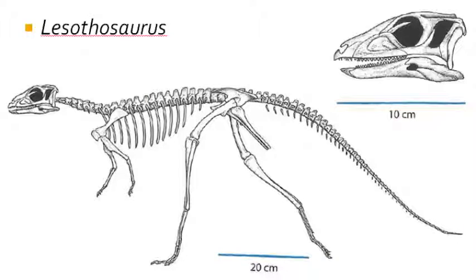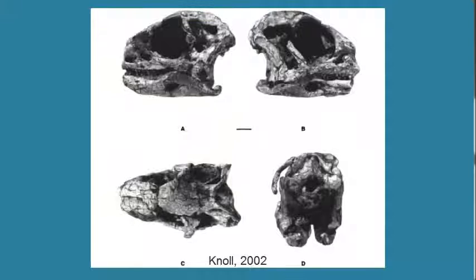What did Lesothosaurus lack? It lacked a dental indentation in the dentary and maxilla, implying that unlike later Ornithischian dinosaurs, Lesothosaurus lacked a fleshy cheek alongside the mouth. So poor Lesothosaurus just didn't have the cheeks.